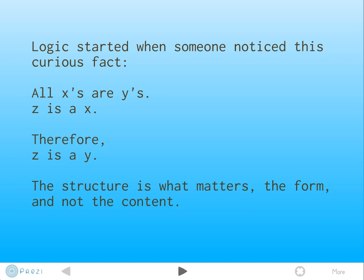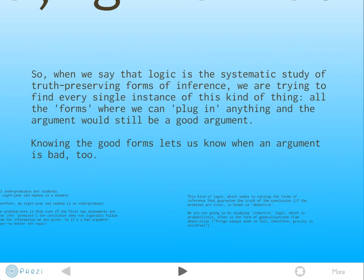What's distinctively logical is when we abstract away from the particulars of the argument and notice it has the following structure: everything that is X is also Y, this particular thing Z is an X, therefore Z must be also a Y. It doesn't matter what we plug in here. The structure is what matters, the form, not the content. What we're trying to do is find every instance where we can plug in anything at all and the argument would still be good. Knowing which forms are good lets us know when an argument is bad, too.